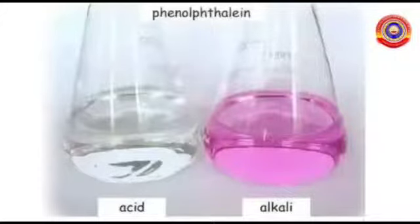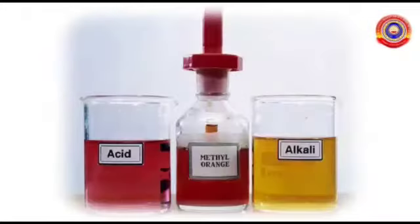Once again, when phenolphthalein is added to the acid, it doesn't change its color, but in alkali it turns pink. Phenolphthalein is not used to determine acid. Methyl orange is used to test both acid and alkali. It shows pale pink in acid and pale yellow in alkali.